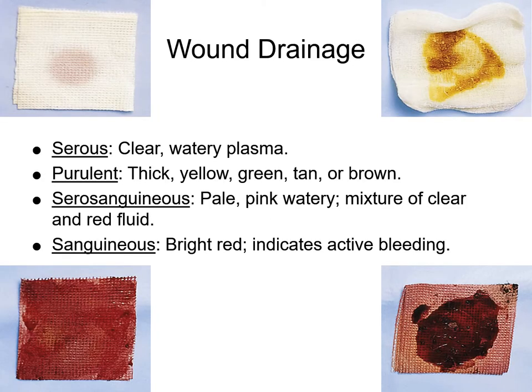Wound drainage types: Serous drainage is clear, watery, light pink in color — it is plasma. Purulent drainage is thick, yellow, green, tan, or brown and indicates infection. Serosanguinous is pale pink and watery — a mixture of clear plasma and blood. Sanguinous is bright red and indicates active bleeding.